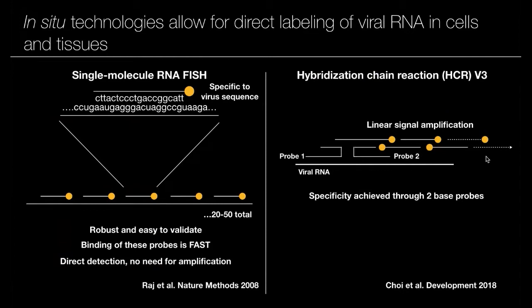Each probe has little arms that provide a landing pad for RNA hairpins that open up and create a platform for linear amplification. It can get really bright. It's very specific off of these two base probes being next to each other, and you can put many of these along the RNA. More recently, we've been working with them to look at different junctions — you can put one probe on one side of a junction and one on the other side, and identify transcripts from that unique junction as well.